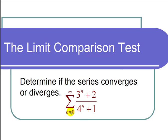We look at this series and say that if we got rid of the constants, the 2 and the 1, then we would just have a geometric series, the summation of 3 fourths to the n. So I would like to compare our series with this geometric series.